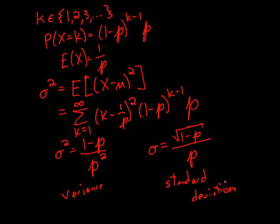So that's the variance and standard deviation for a geometric random variable.